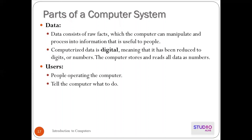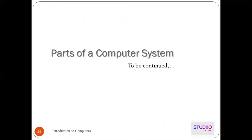The last component is users — people who operate the computer and tell it what to do. There are two types of users. One is an end user, like you and me — we use the system, do our work, and shut down. The other is the programmer, who creates applications or programs for the computer. We will continue in the next lecture.